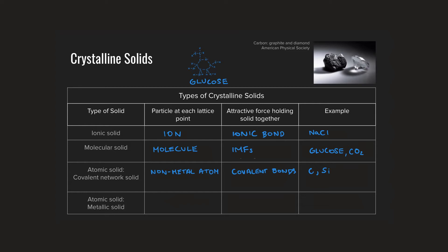And then one final type of atomic solid: rather than having non-metal atoms at each lattice point, if we have metal atoms, we would now expect to see what we refer to as a metallic solid. These are very familiar substances, like a chunk of iron. What holds those iron atoms together is metallic bonding — that sea of electrons — the delocalized electrons that are attracted not only to their own nucleus, but also to all of the neighboring nuclei around them. So we find lots of different types of solids, and depending upon the particles at each lattice point and the attractive forces holding them together, we can make predictions about the properties of those different solids.